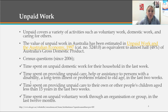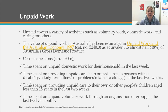Unpaid work is an important consideration in our field and one that's often overlooked in society. Unpaid work covers a variety of activities such as voluntary work, domestic work, and caring for others. From the unpaid work in the Australian economy in 1997, it was estimated that unpaid work is almost half of Australia's gross domestic product. That domestic and volunteering work makes up almost 50% of our GDP, which is really interesting considering how undervalued it sometimes is.